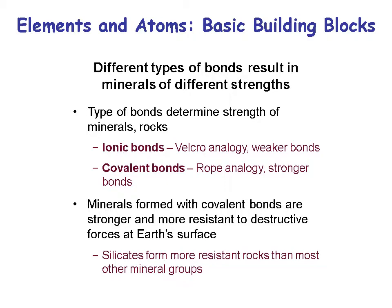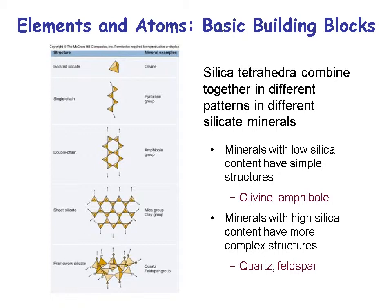Silica tetrahedrons can combine together in different structures. An isolated silicate — like olivine, the magnesium silicate Mg₂SiO₄. A single chain silicate gives pyroxene-type minerals. Double chains of tetrahedrons are amphiboles. A sheet silicate — like mica — is strong in one direction and can be pulled apart in the other. A framework silicate, like quartz or feldspar, builds strong building blocks in all directions.